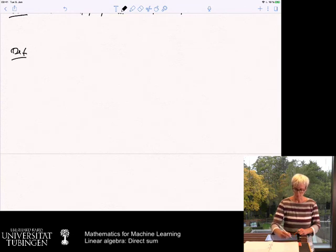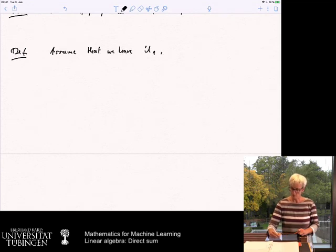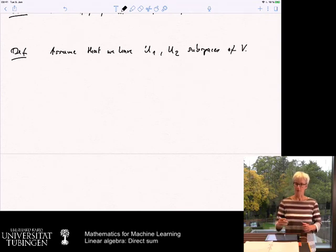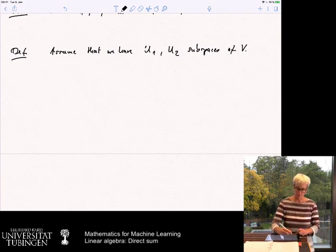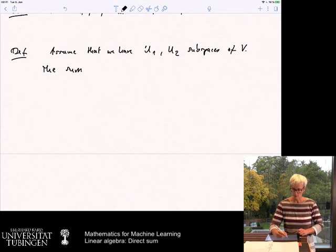So here is our definition. Assume that we have two subspaces, u1 and u2, they are subspaces of a vector space v. And now we first define what the sum is.